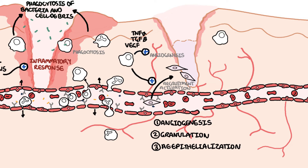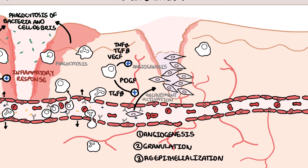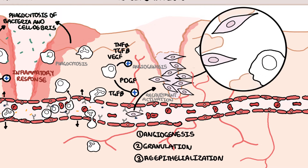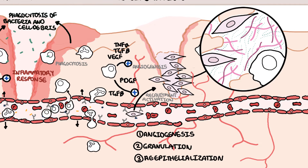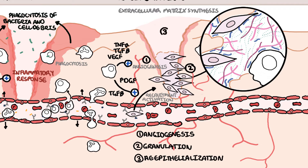In granulation, the second step, growth factors such as platelet-derived growth factor and transforming growth factor beta attract fibroblasts to the wound. Fibroblasts are the cells which produce the granulation tissue. Fibroblasts proliferate and form a matrix consisting of adhesive proteins, proteoglycans, and glycosaminoglycan gel, as well as fibrous proteins such as collagen and elastin. These components are essential for new matrix formation and tissue repair.